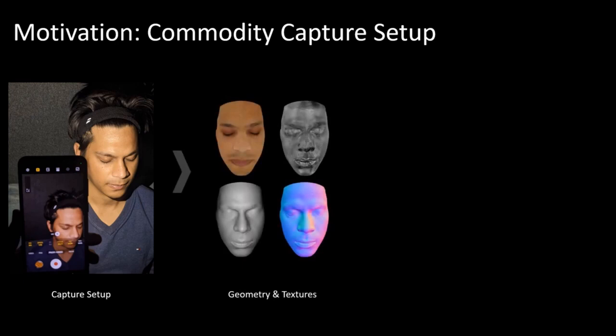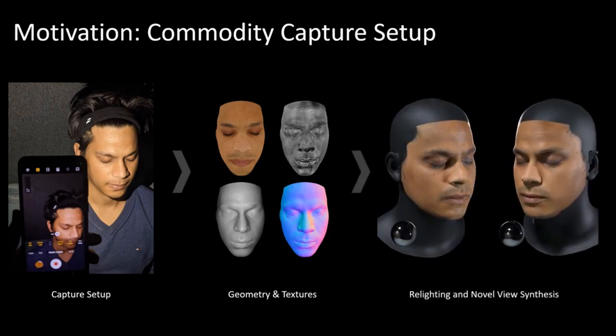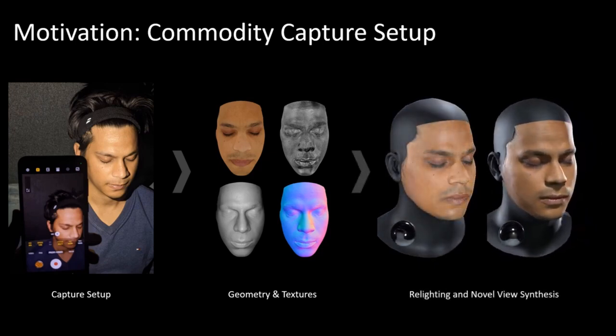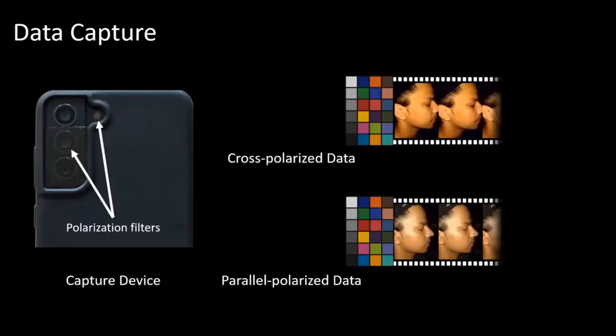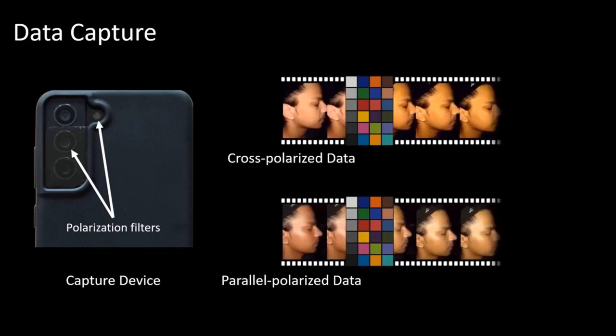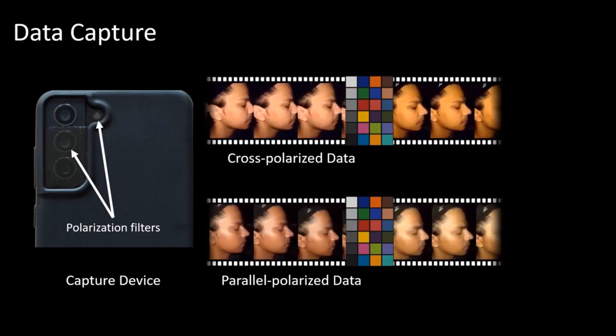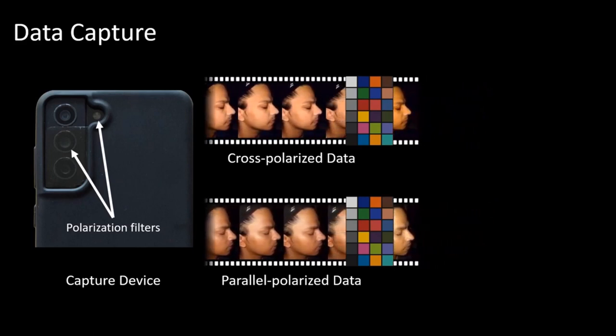textures of human faces in a home capture scenario. The output of our method can be used in standard rendering frameworks to produce photorealistic relighting imagery. Using a smartphone equipped with polarization foils, we capture cross-polarized and parallel-polarized images of a subject. In a preprocessing step, we color calibrate the smartphone camera with a Macbeth chart.